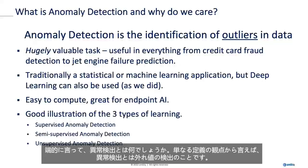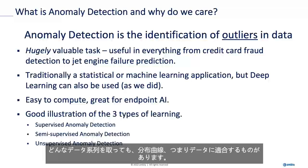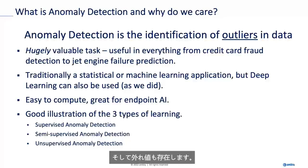Briefly, what is anomaly detection? Purely from a definitional point of view, anomaly detection is the detection of outliers in data. If you take any kind of data series, you'll always have things that kind of fit the curve or fit the data, and then you'll have some outliers.